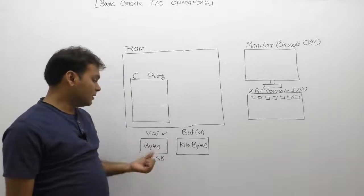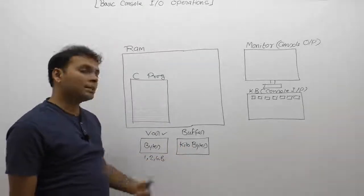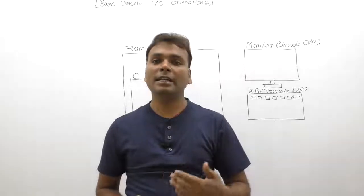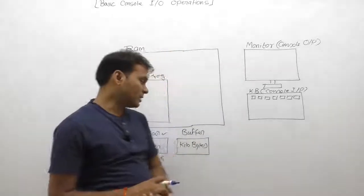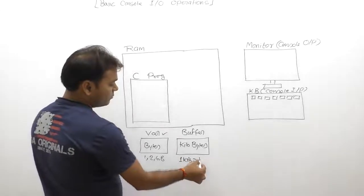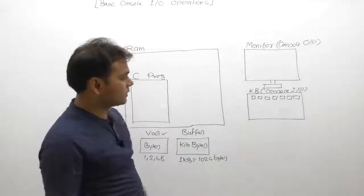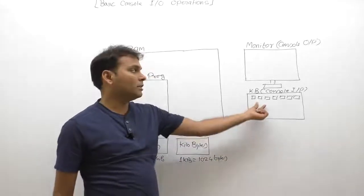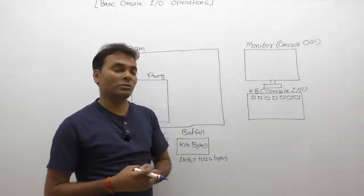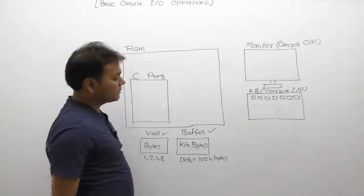The difference is: variables store only a limited amount of data — like 1 byte, 2 bytes, 4 bytes, or 8 bytes. Buffers are used when you need a larger amount of data, like 1 KB, 8 KB, 16 KB, 32 KB and so on. 1 KB is equivalent to 1024 bytes. When you have thousands of characters to read, buffers are used.